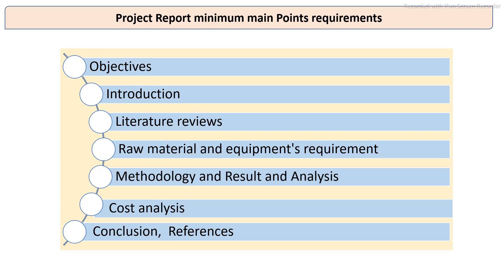The minimum requirements in a project report include: objectives of the project, introduction, literature review, raw materials, equipment requirements, result analysis involving specific analytical methods, sensory evaluation, cost analysis of the final product, conclusion, and references. Thank you very much.